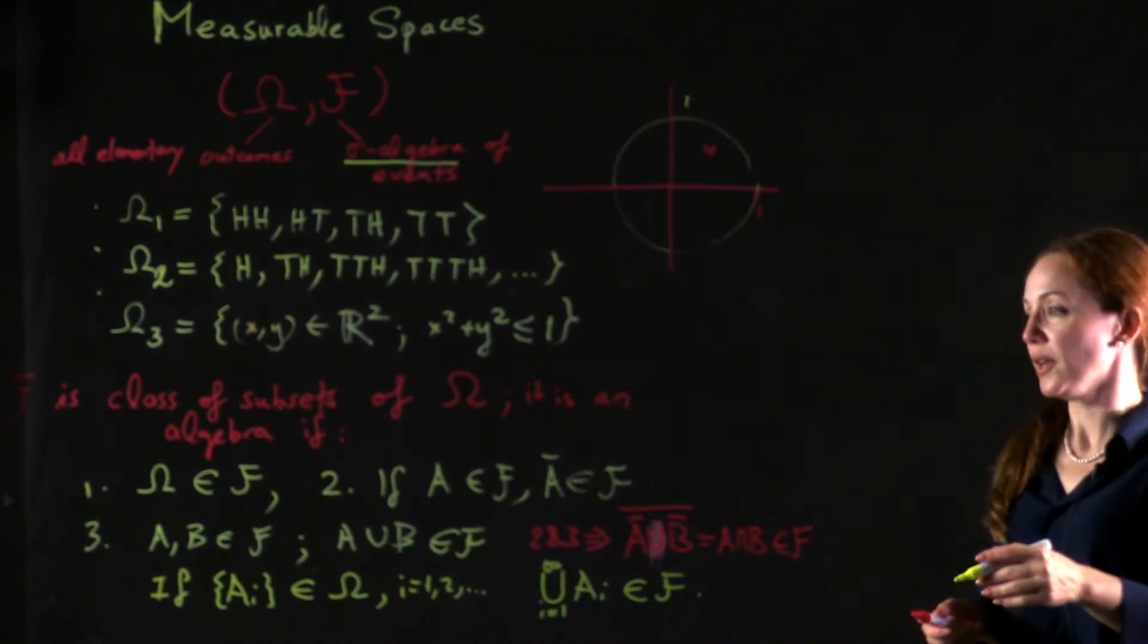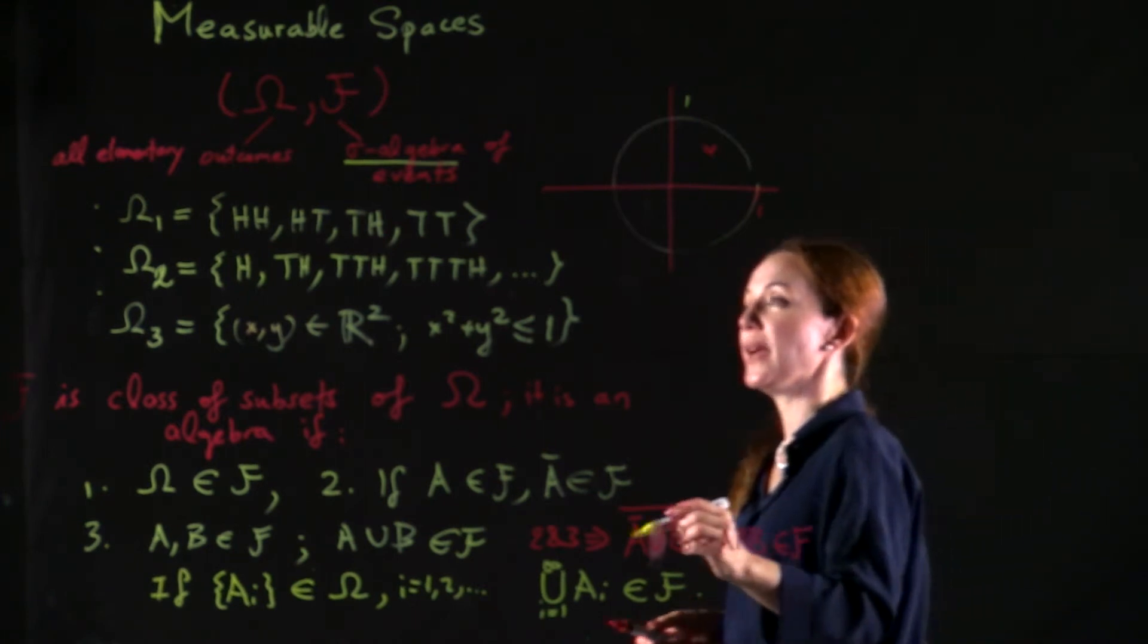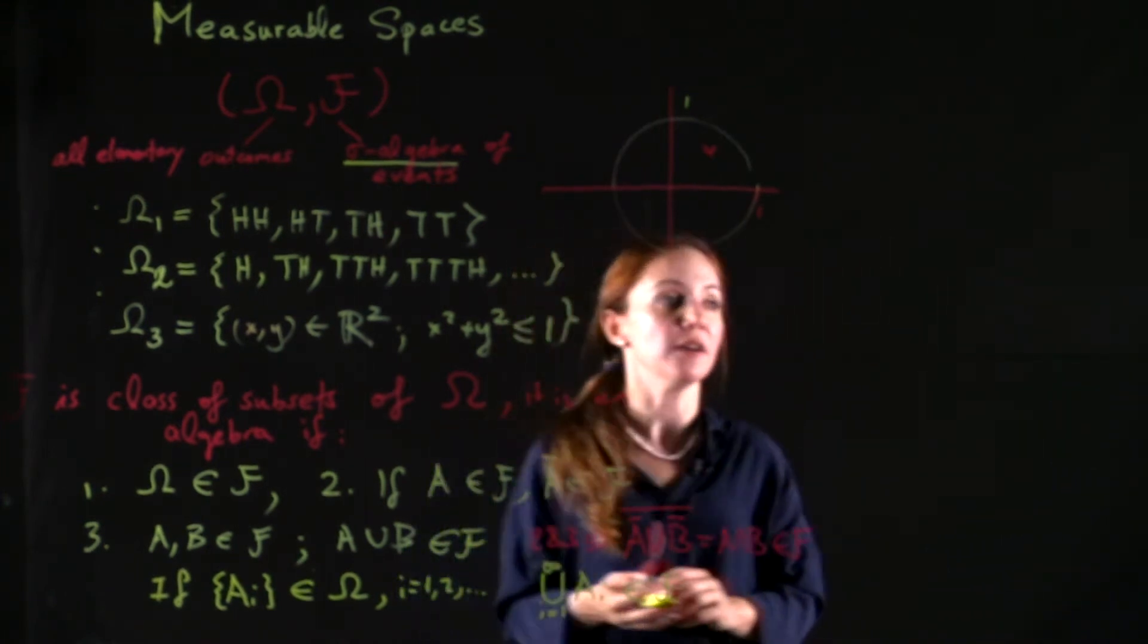We will require that if A i is a sequence of sets in omega, where i takes positive integer values, then the infinite union A i is required to be in F. Then F is a sigma algebra, and you can show that countable intersections are also included in F. So now we have our measurable space, omega F.